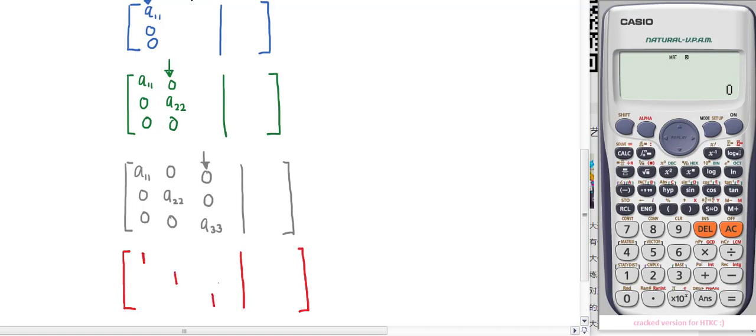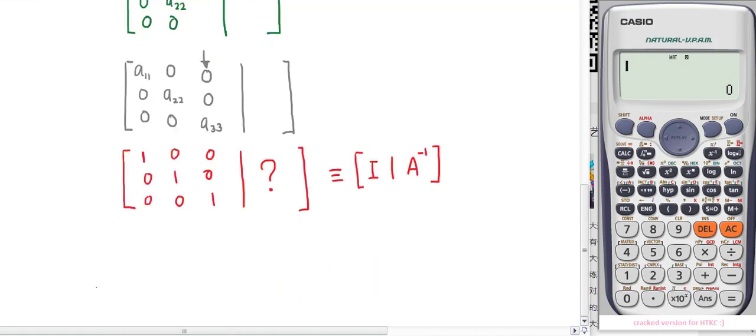Once every element becomes zero except the leading diagonal, use row operation multiplication to convert the leading diagonal to ones. At the same time, the left side becomes the identity and the right side becomes the inverse of matrix A.